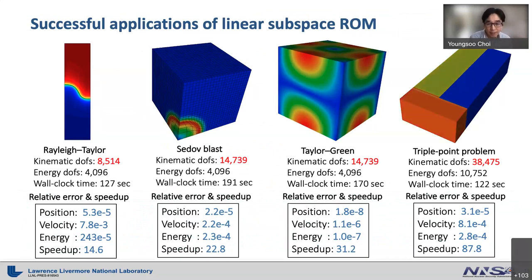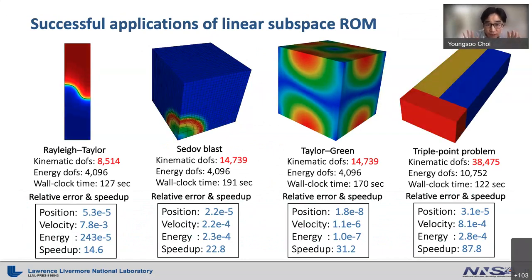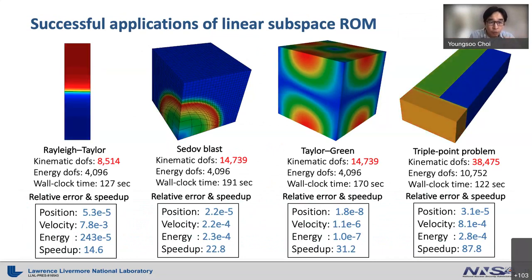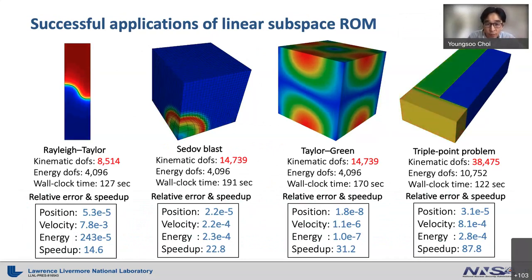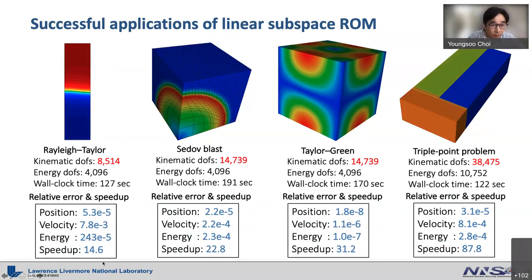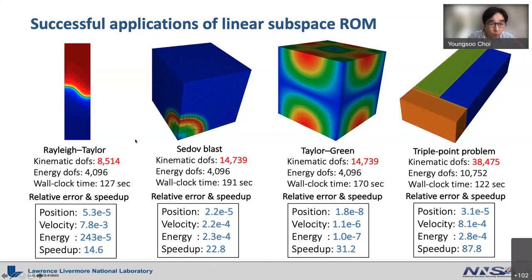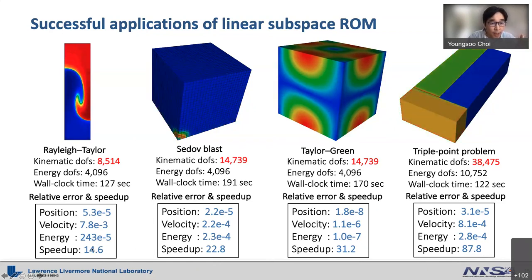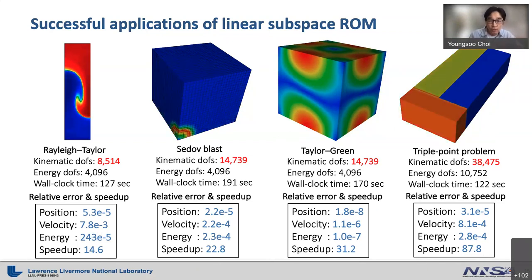The linear subspace ROM has been successfully applied to tough simulations such as Lagrangian hydrodynamics, shown here. We added a time windowing approach to overcome advection-dominated phenomena in Lagrangian hydrodynamics, achieving speedups of 14.6, 22.8, 31.2, and 87.8 for various simulations. With great accuracy — comparing solutions with the full-order model yields relative errors less than 0.1% — the reduced model solution is indistinguishable from the full-order model solution.